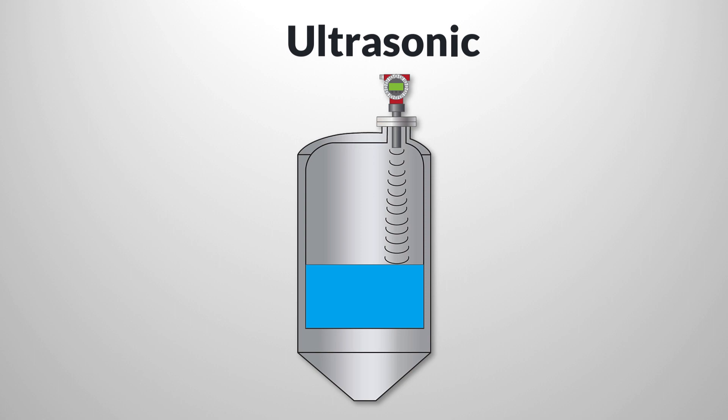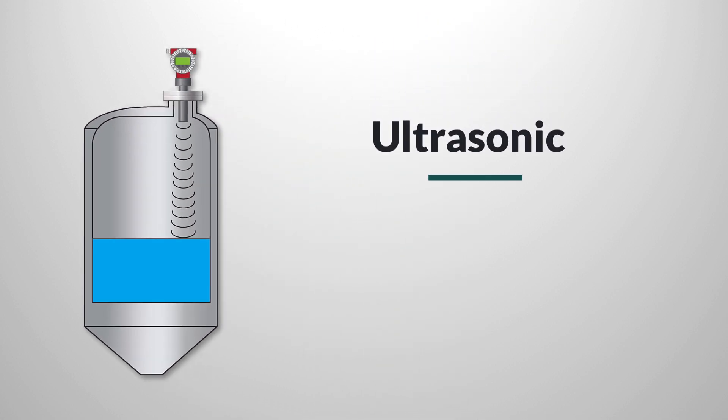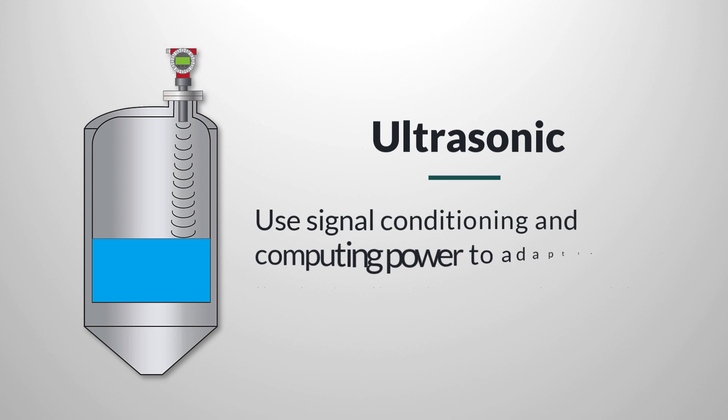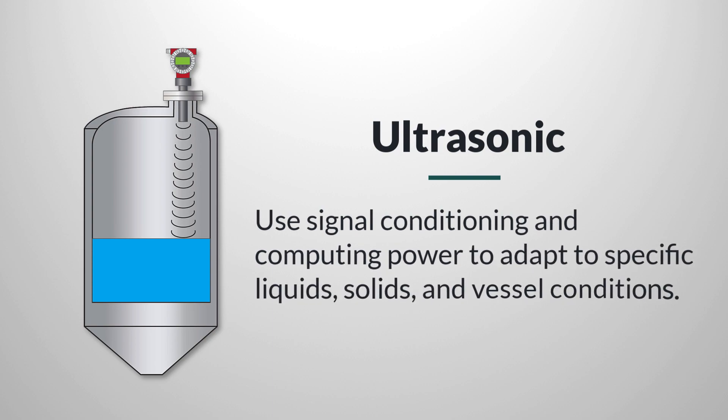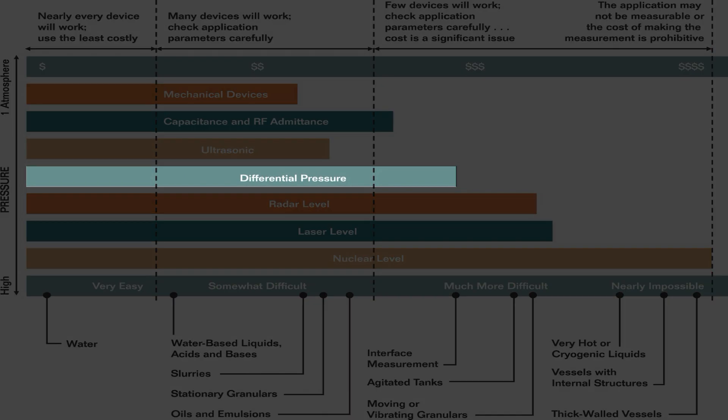Ultrasonic gauges are also quite versatile and offer good value. Ultrasonic gauges calculate level based on the time required for an ultrasonic signal to be reflected from the liquid surface. They, and the other time-of-flight gauges coming later, use signal conditioning and computing power to adapt to specific liquids, solids, and vessel conditions. They are seeing increasing applications as the cost of signal conditioning and computing have come down.